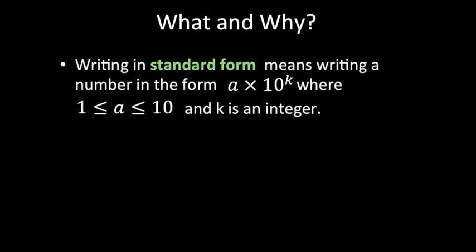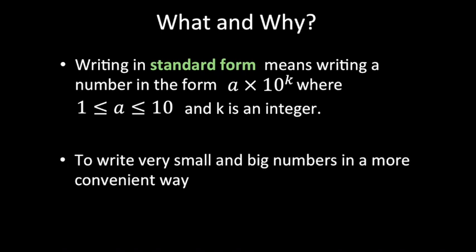Another term for standard form is scientific notation — some books use the phrase scientific notation for standard form. We use this because there are very small and very big numbers, and it is more convenient to write them in standard form.